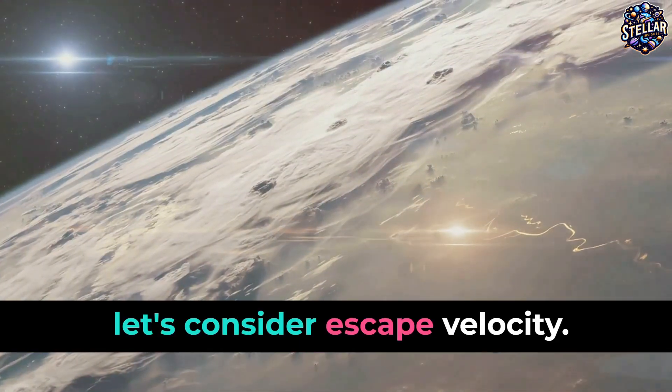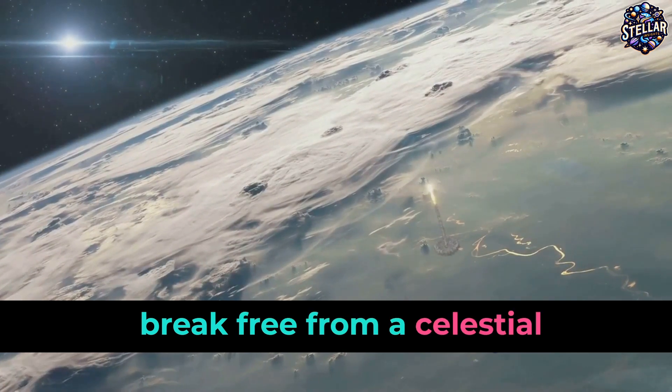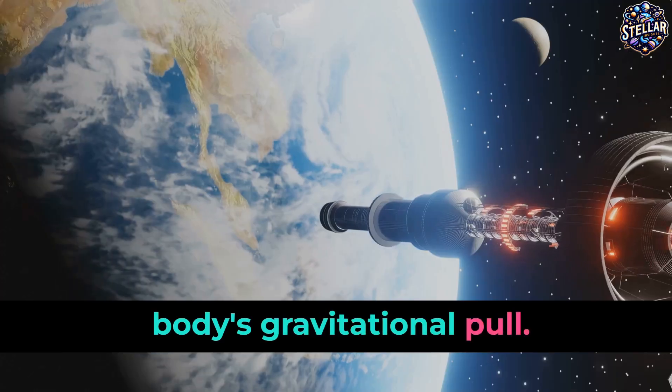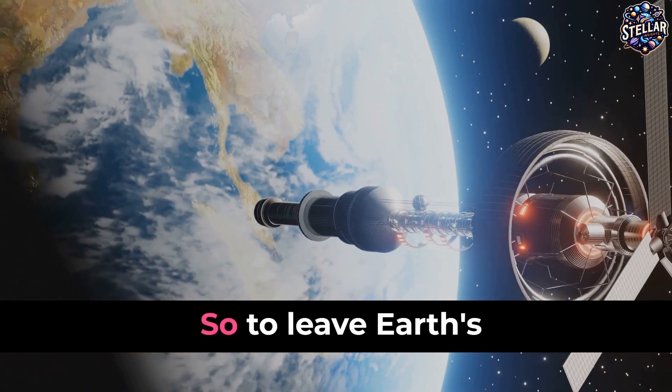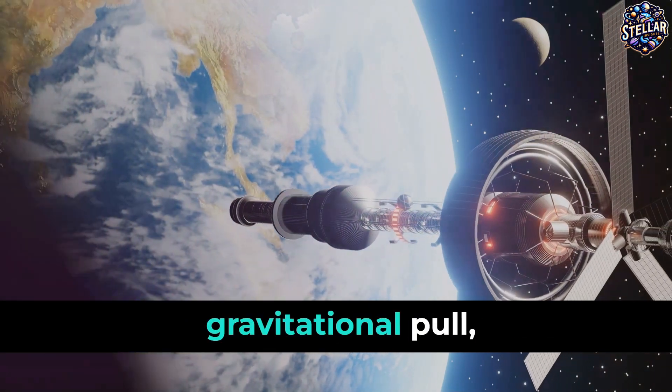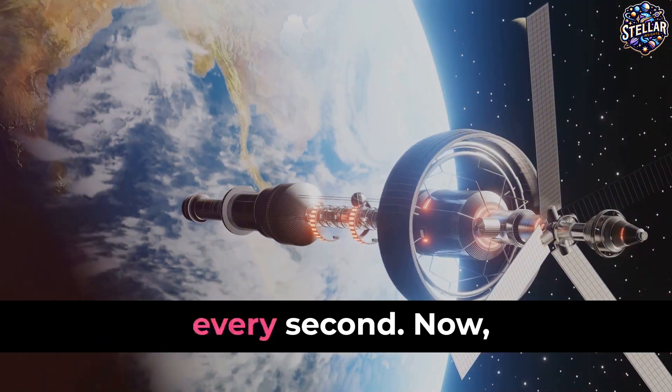Now, let's consider escape velocity. This is the speed needed to break free from a celestial body's gravitational pull. For Earth, it's about 11.2 kilometers per second. Yes, per second. So to leave Earth's gravitational pull, you would need to be traveling at a speed of 11.2 kilometers every second.